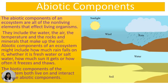Abiotic components of an ecosystem might include how much rain falls on it, whether it is freshwater or saltwater, how much sun it gets, or how often it freezes and thaws. The biotic components of an ecosystem both live and interact with the abiotic components.